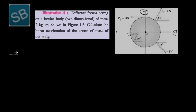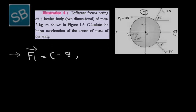Writing the given forces from the figure. The first force F1 is given as 8 N. Since force is a vector quantity, we write it in vector form. This force is in the negative X direction, so its X component is minus 8 and there is no component in the Y direction. So its Y component is 0. The unit of force is Newton.